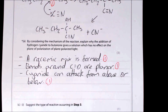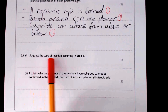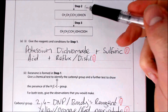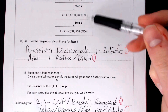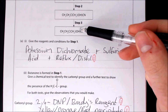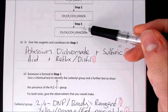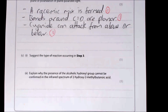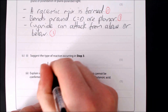Part C1: suggest the type of reaction in step three. In step three, the nitrile (cyanide) group is converted to a carboxylic acid. Since water is involved in breaking the CN group, the reaction type is hydrolysis.